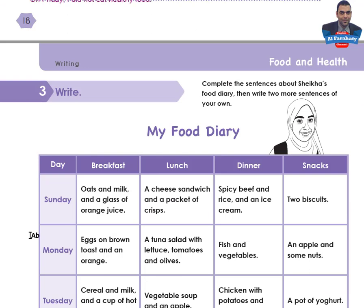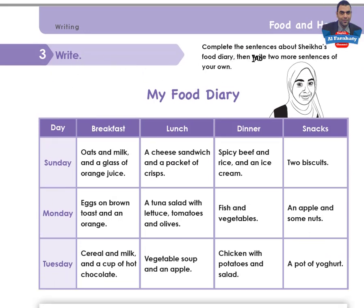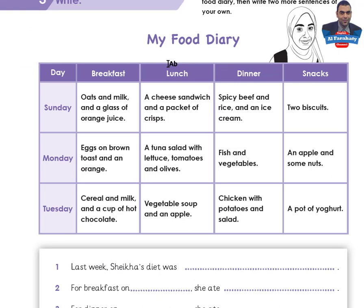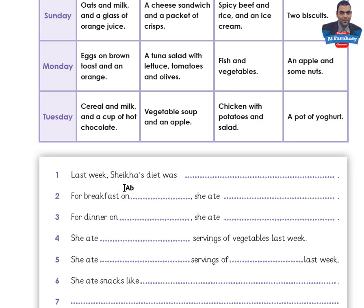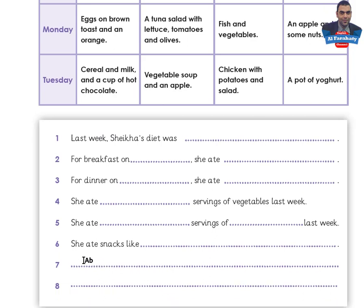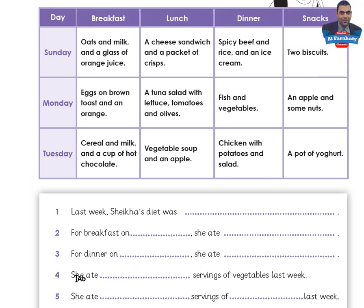Let's go to page 19, Activity 3: Write. Complete the sentences about Sheikha's food diary, then write two more sentences of your own. This is Sheikha's food diary. The sentences to complete are: 1. Last week, Sheikha's diet was... 2. For breakfast, on... she ate... 3. For dinner, on... she ate... 4. She ate servings of vegetables last week. 5. She ate servings of... last week. 6. She ate snacks like... Then write two more sentences. Look at Sheikha's food diary and complete the sentences, then come back to check your answers.